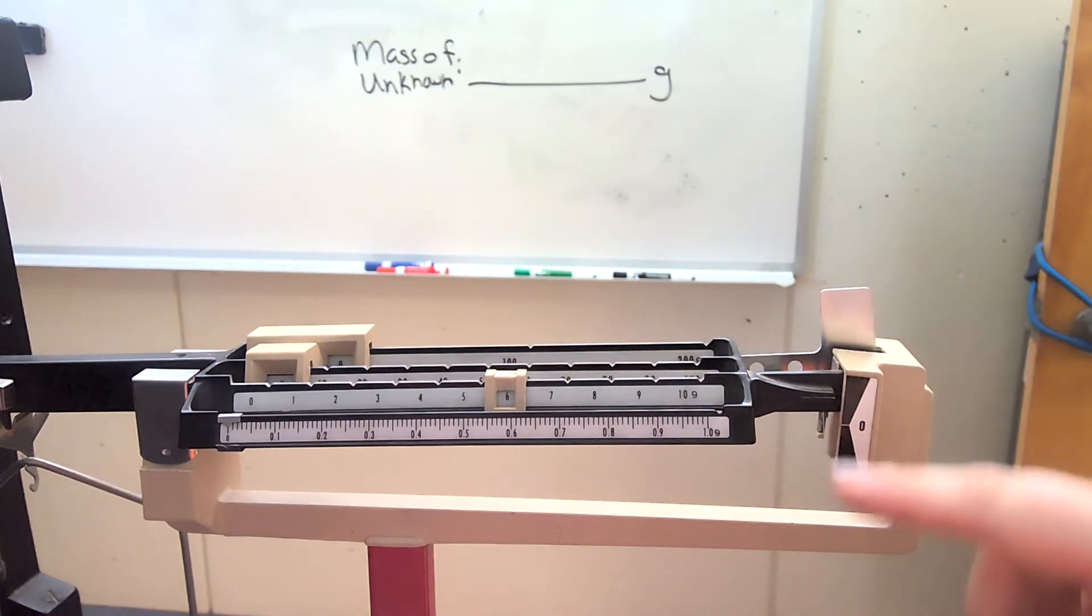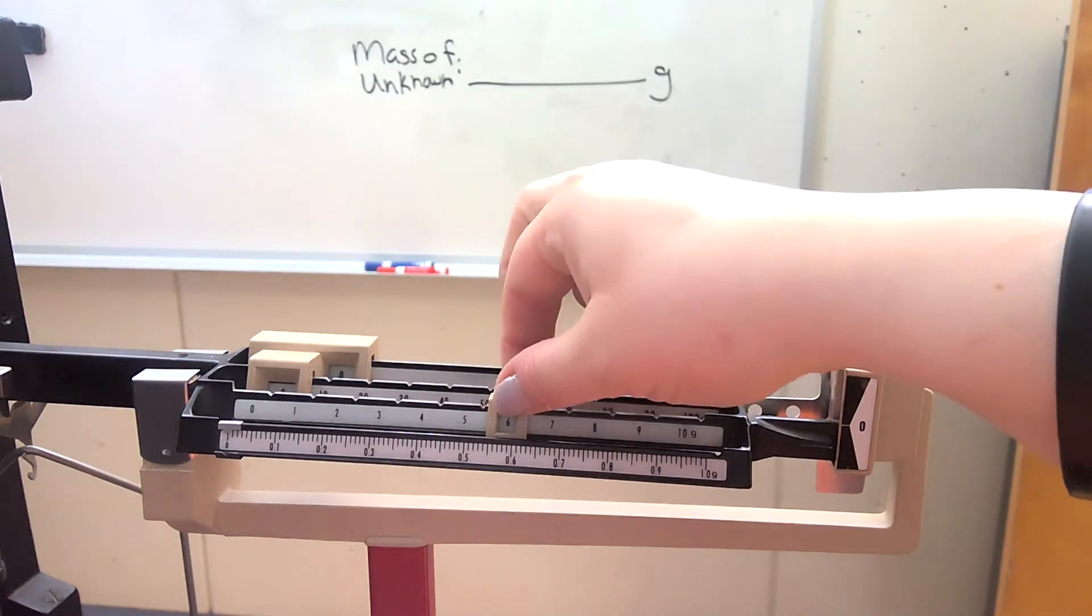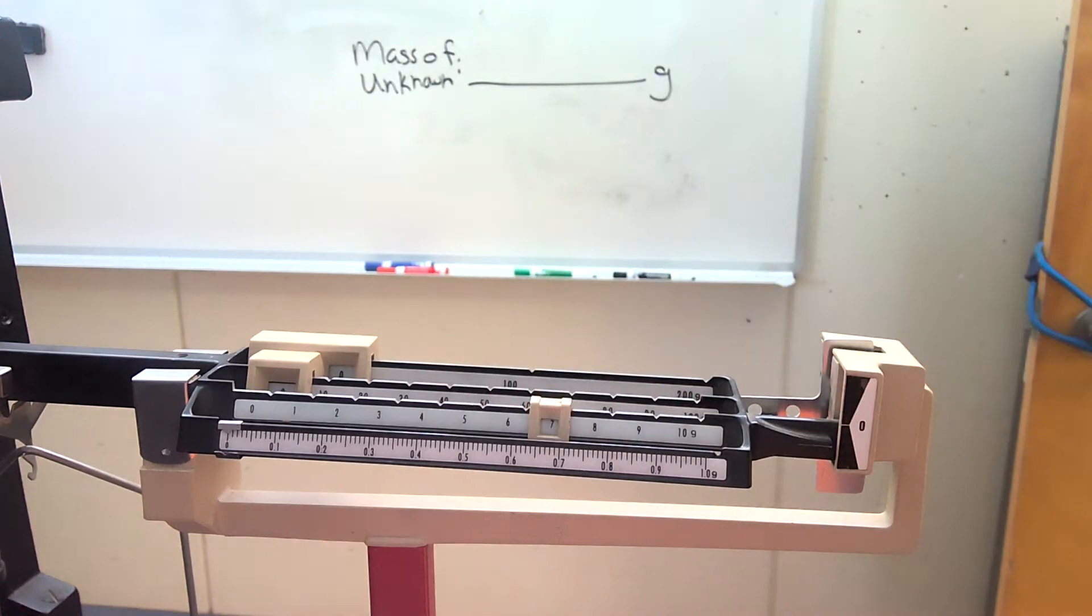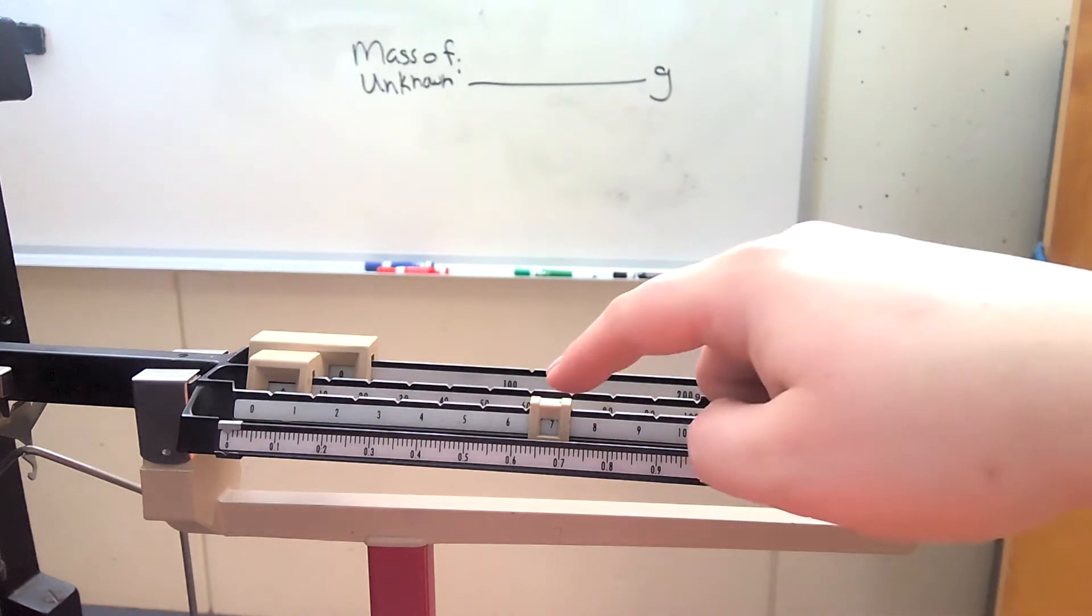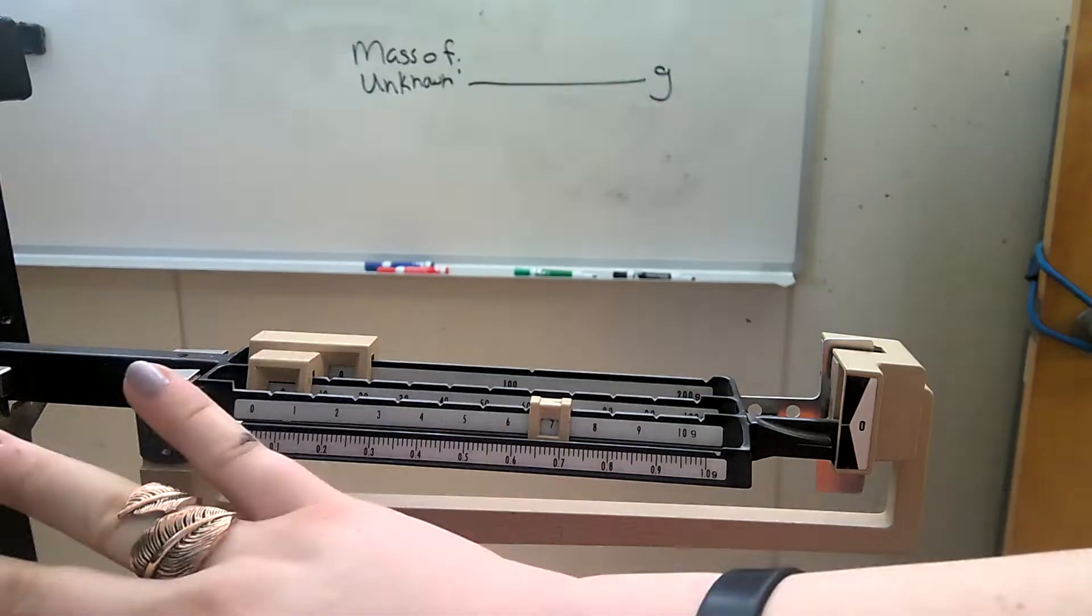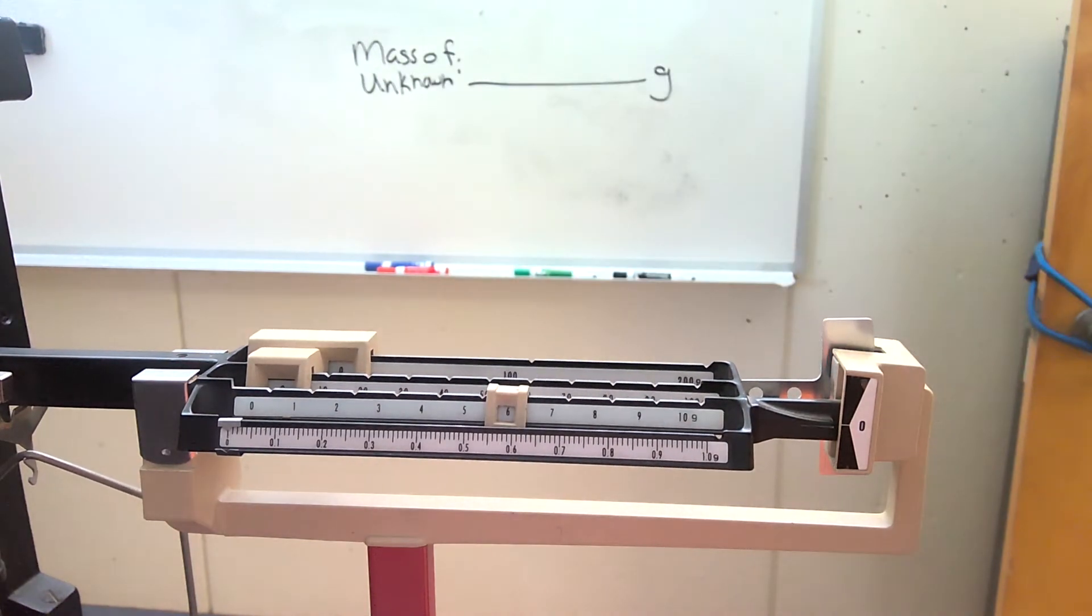But let's see if seven. Because the arrow went down past the zero, that means that this seven, it's heavier than what's on the pan. So seven cannot be what's in the ones place.